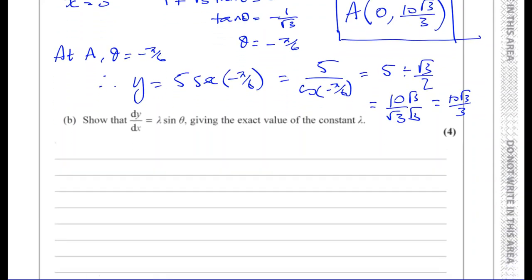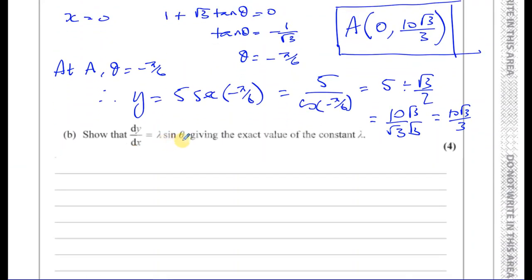Part B says: show that dy/dx equals lambda sine theta, giving the exact value of the constant lambda. To find dy/dx for this parametric equation with parameter theta, I'll use the chain rule: dy/dx equals dy/d theta multiplied by d theta/dx.